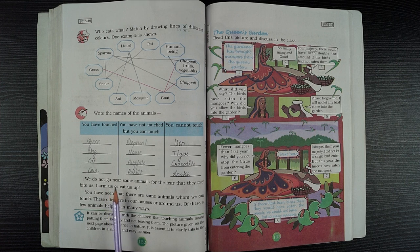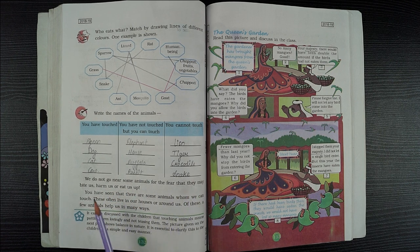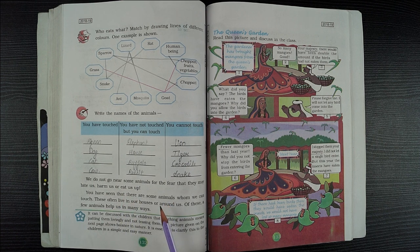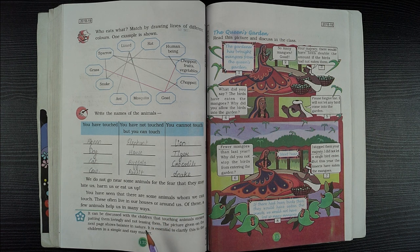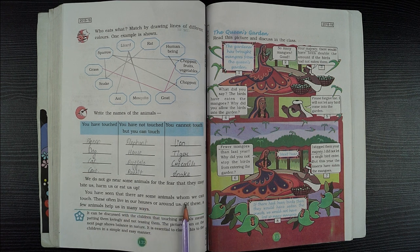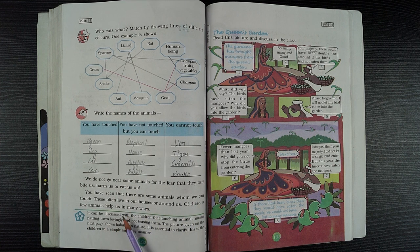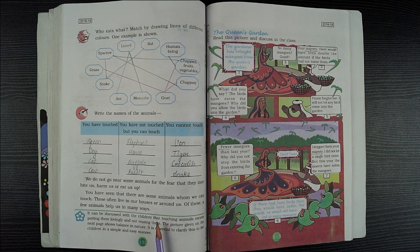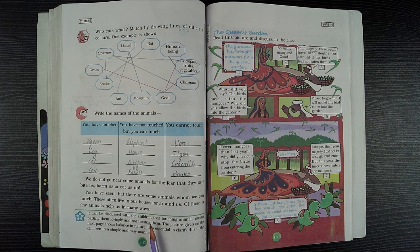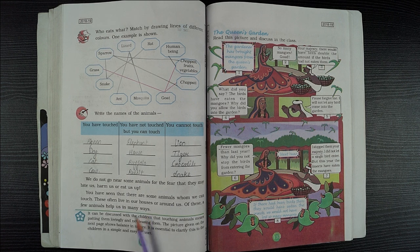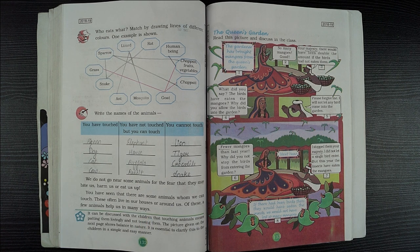We do not go near some animals for the fear that they may bite us, harm us, and eat us up. There are some animals whom we can touch. These often live in our houses and around us. A few animals help us in many ways.